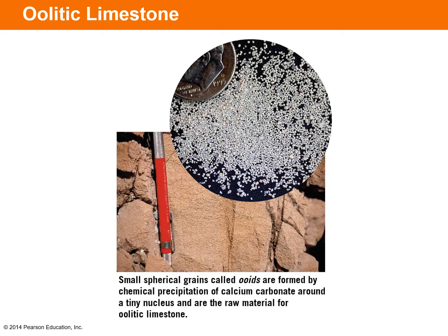This slide shows what ooids within oolitic limestone look like — zooming in on individual ooids formed by chemical precipitation of calcium carbonate around a tiny particle. A dime is shown for scale, and the figure below shows what the larger body of oolitic limestone looks like.